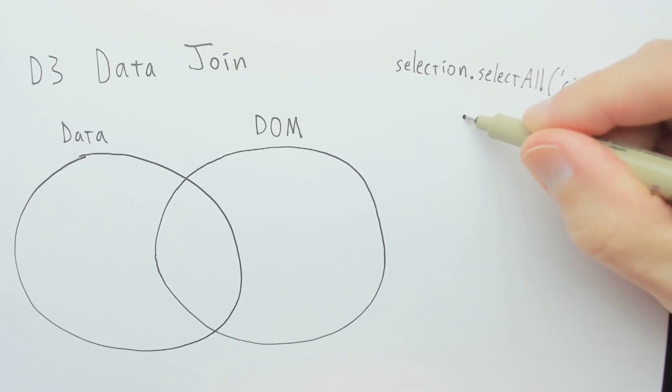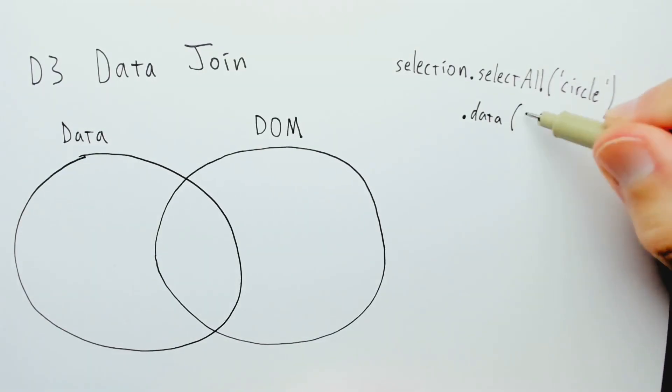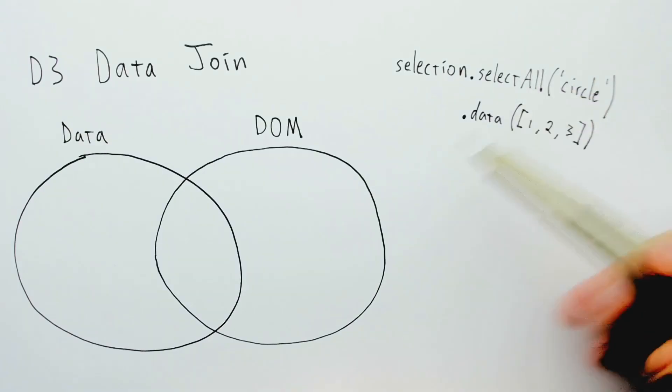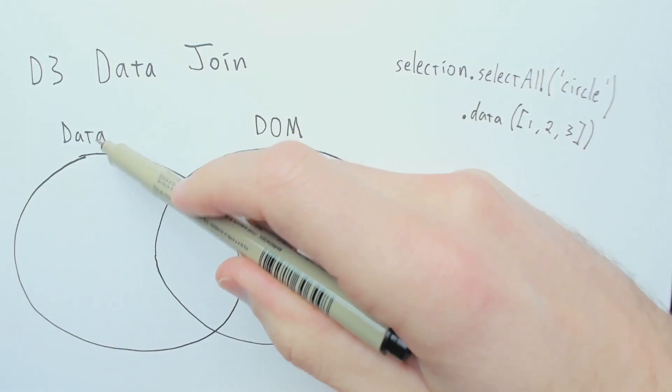Next, we say .data, and let's say we pass in an array of like 1, 2, 3. This part tells D3 what the data portion is.